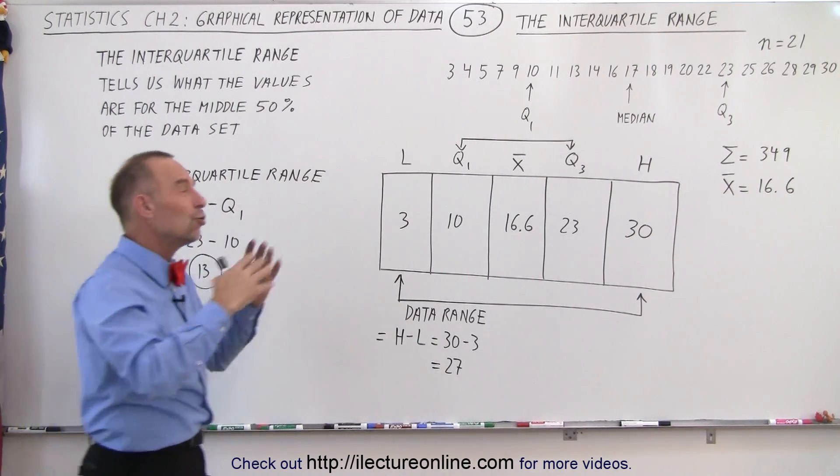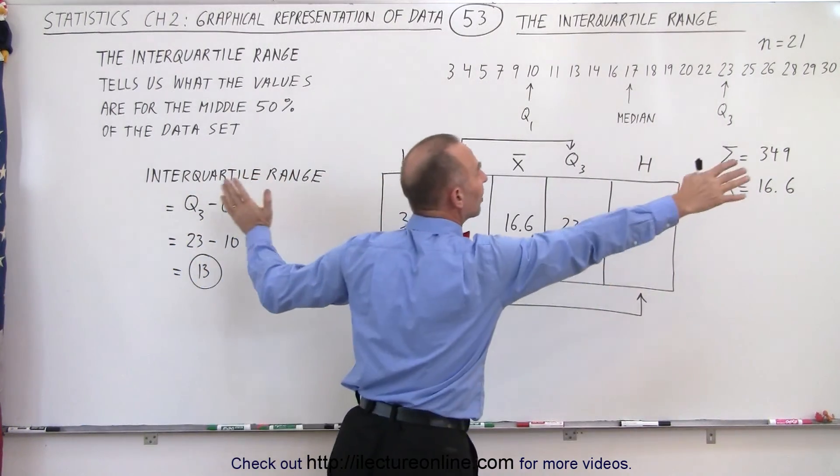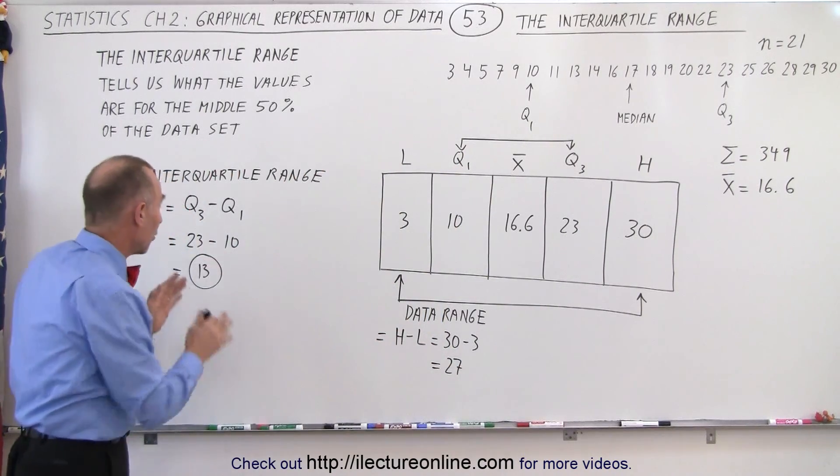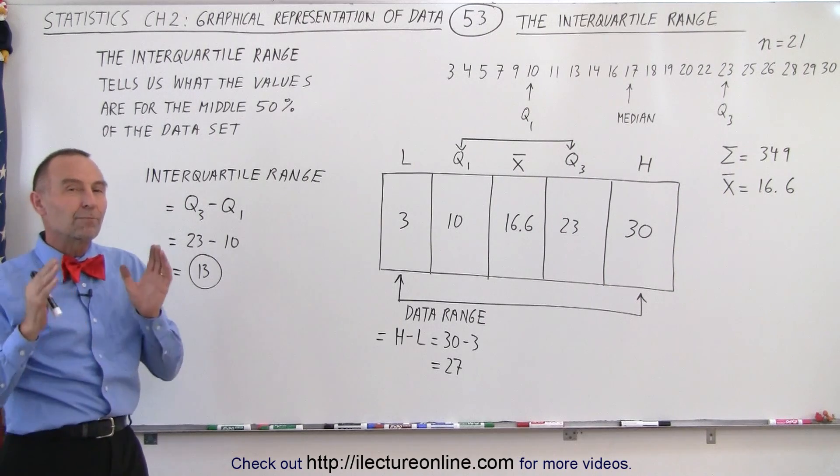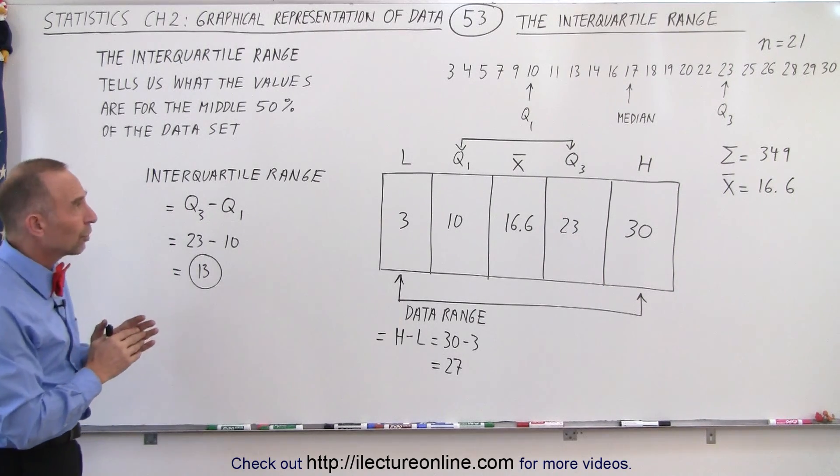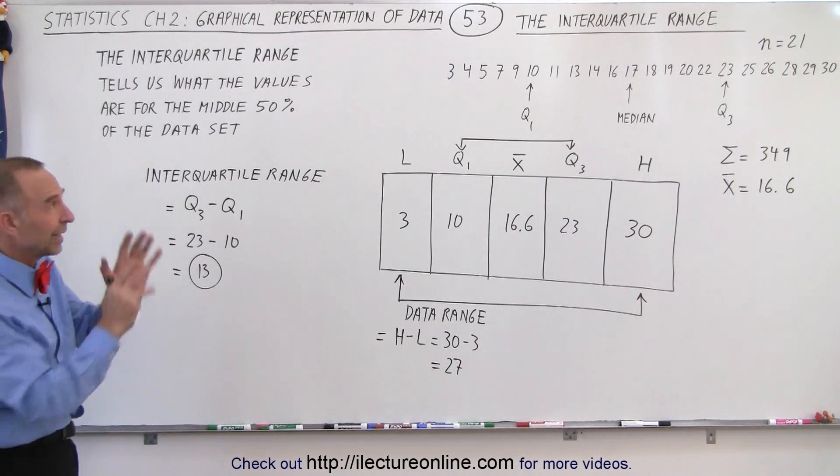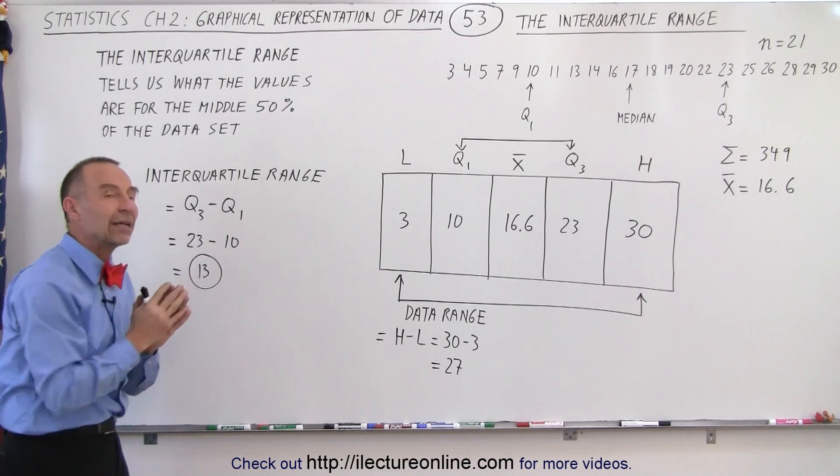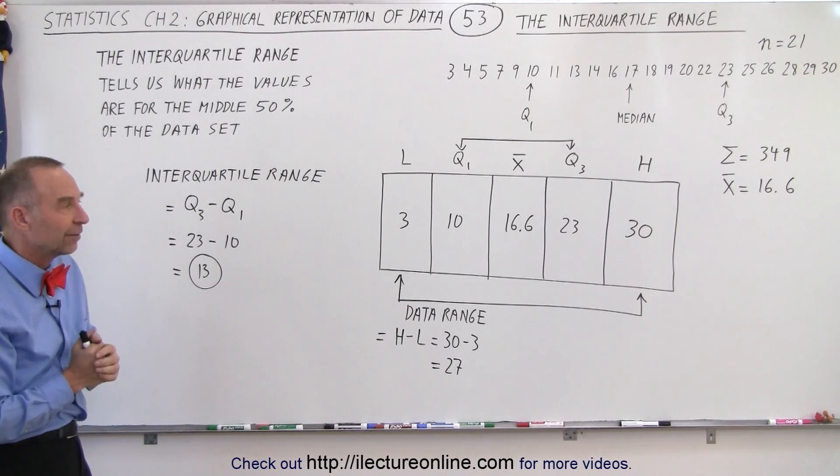If that number is very small, it then ignores those very large outliers that we might possibly have, which then doesn't affect what's happening in the middle of the data set. So the interquartile range gives you a feel of how close the data is for the middle part of the data set.